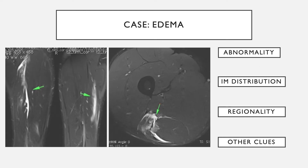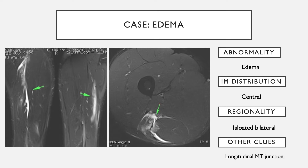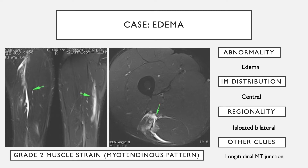In this case, there is fairly discrete linear edema bilaterally. On cross-sectional imaging, it is more central, centered around the myotendinous junction. It is isolated and longitudinally along the myotendinous junction. This is a typical example of a grade two muscle strain — the myotendinous pattern — where the injury is along the myotendinous junction.